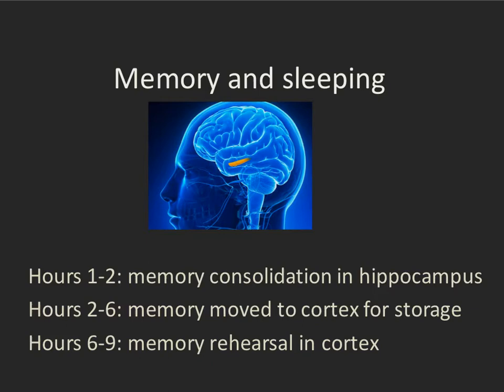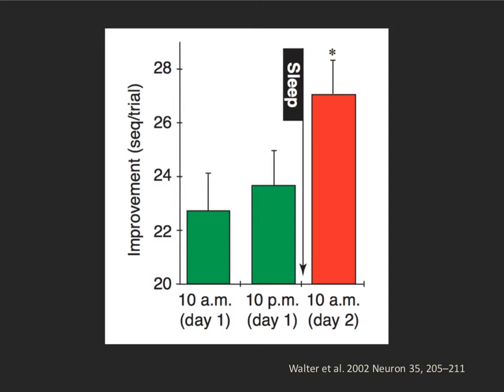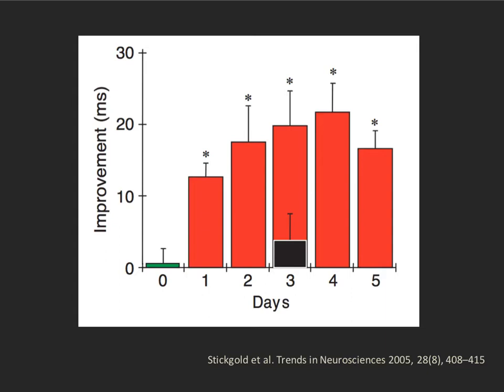Here's a study showing the effect of sleep. Subjects learned a motor task at 10 a.m. on day one. They were tested again at 10 p.m., 12 hours later, with no significant improvement. They then went to bed and weren't tested again until the next morning at 10 a.m. — lo and behold, there was now a significant improvement in their speed on this motor task. Their brain rehearsed it during the night, and they got up the next morning able to do the task better.